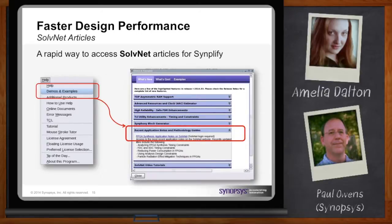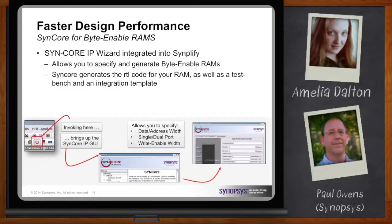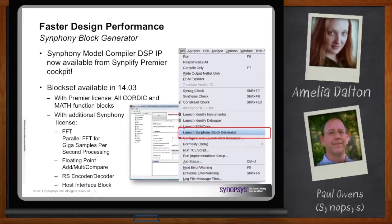One of the things that's helpful is we have integrated with our tool something called Syncore. Syncore allows you to specify and target a particular technology, specify your RAM — address width, whether it's byte-enabled — and this will actually generate the RTL code that you can infer into your design as well as create a test bench. Similarly, if you're using DSP functions or math functions, we've integrated the Symfony model compiler, which allows you to create DSP functions such as FFTs, floating point, RS encoders and decoders, etc. This is technology-independent and allows you to try various what-if scenarios to generate code along with test benches.